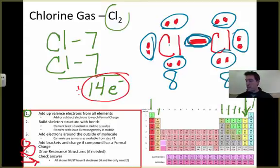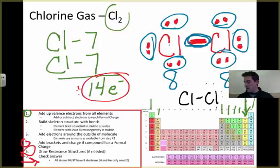We've checked our answer. There's no way this can be wrong. Indeed, this is the Lewis structure for chlorine gas: Cl-Cl with the electrons around the outside edge.